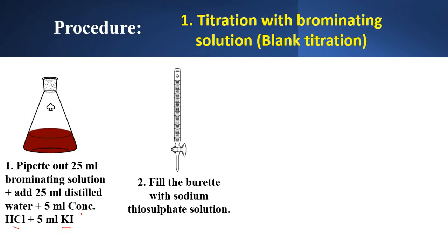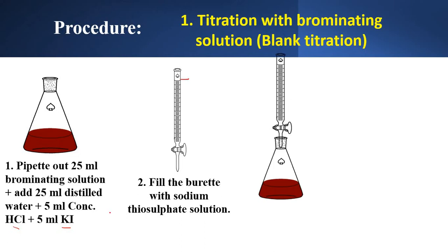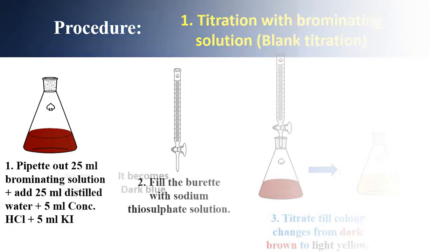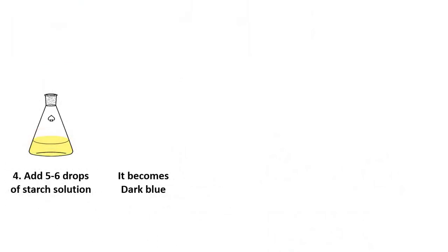Remove the bubble and adjust the zero mark. Then titrate this brown color solution with sodium thiosulfate solution. The end point of the titration is dark brown to light yellow — titrate until the color changes from dark brown to light yellow. Then keep this solution for a few minutes, and add 5 to 6 drops of starch solution as the indicator. The color of the solution becomes dark blue.